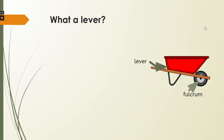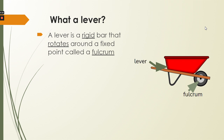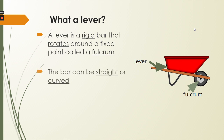Let's start with a lever. A lever is a rigid bar that rotates or moves around a fixed point called a fulcrum. If you've ever used a wheelbarrow, you can move it up and down or side to side around this fulcrum — the point that the lever rotates around. The bar can be either straight or curved.